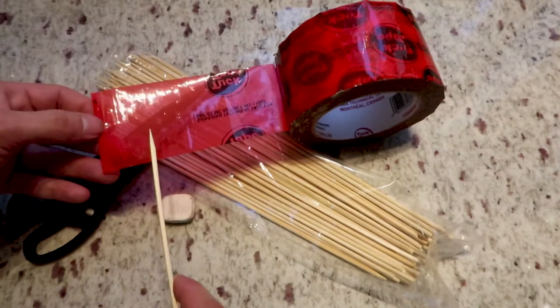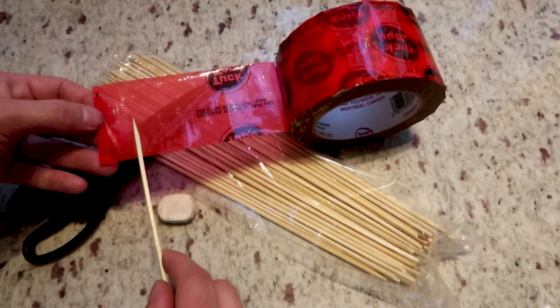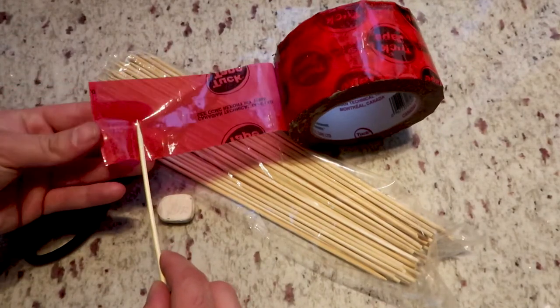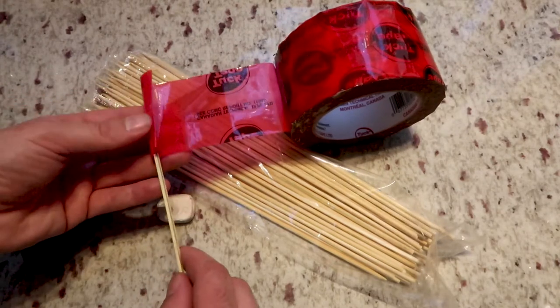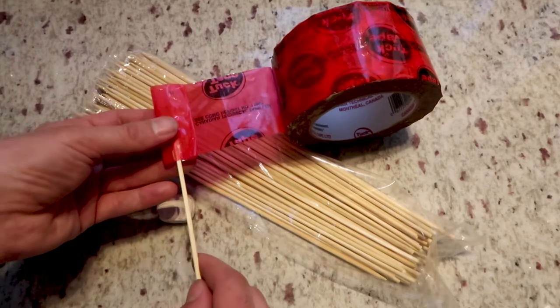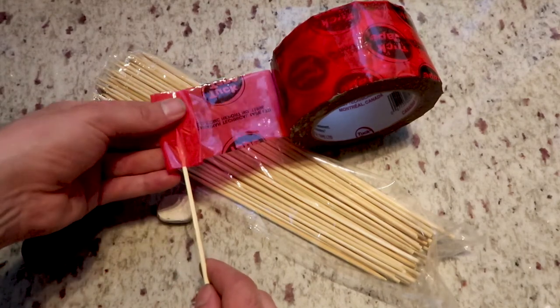I'm going to take a bamboo skewer and place it halfway along the diameter of the tape. Then I'm going to fold the tape sticky side down together like this, and then I'm going to fold it again. The bamboo skewer stays in the middle.